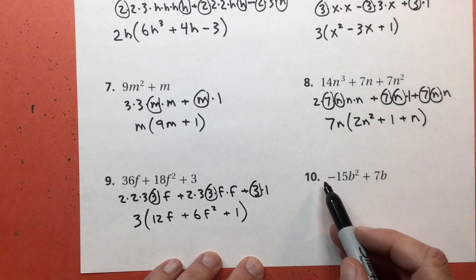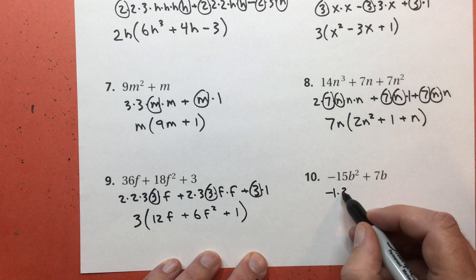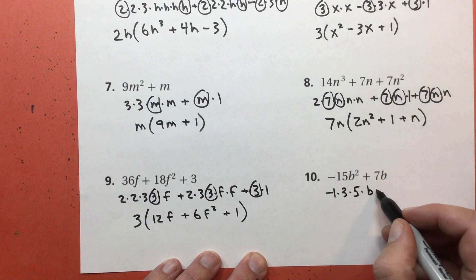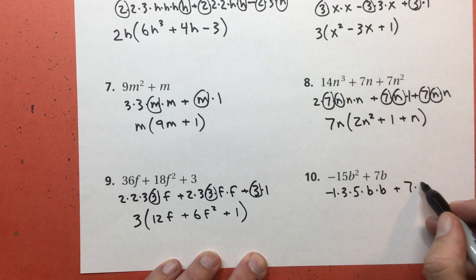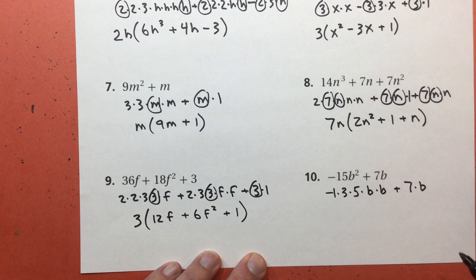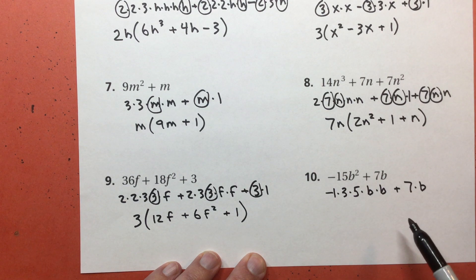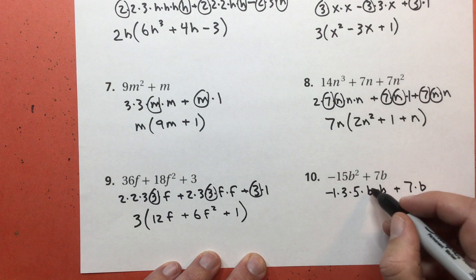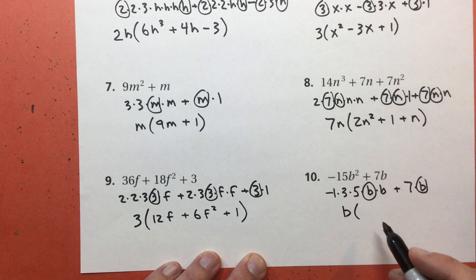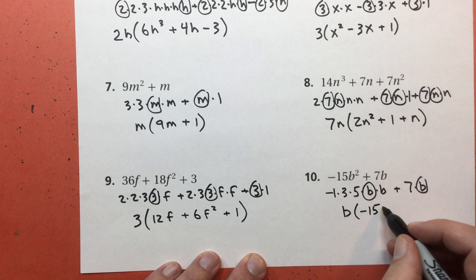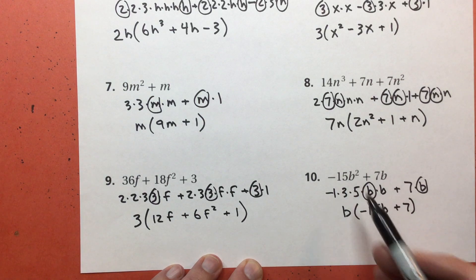And then finally, for problem number 10, I have negative 1, 15 is 3 times 5, and B to the second power is B times B. 7 times B, because 7 is the right prime. Negative 1, 3, 5, 7. No common factor there. B times B, with a B over here, common factor is just B. So factoring, I get B times negative 15B plus 7. The only thing I could factor out was one of the Bs.